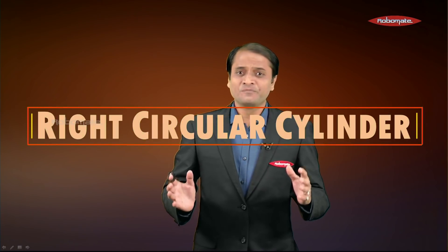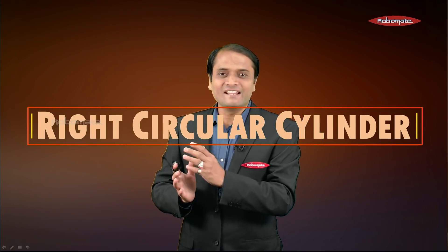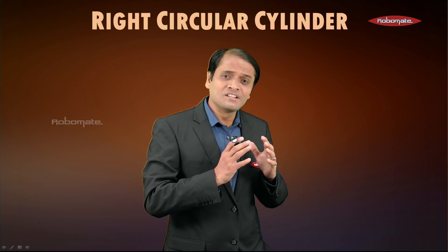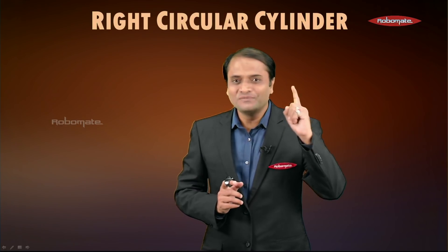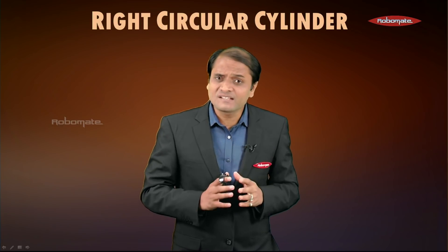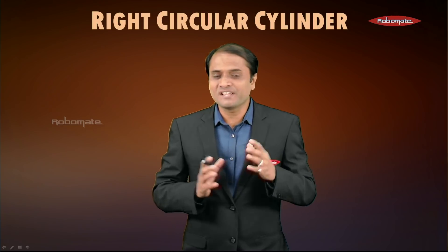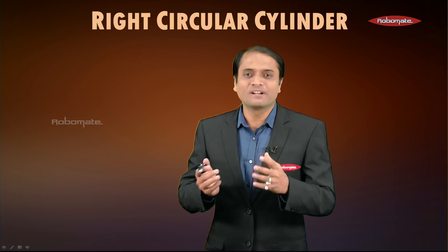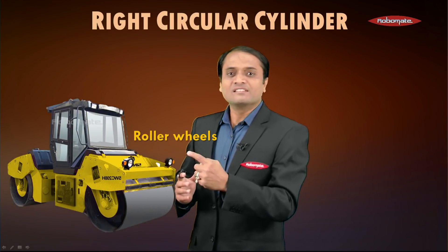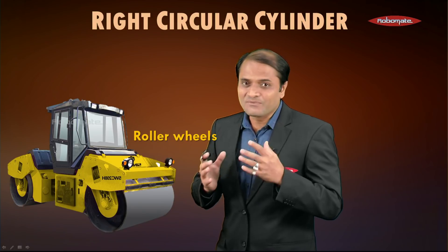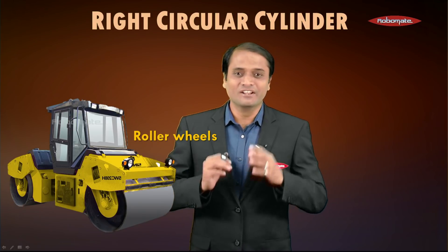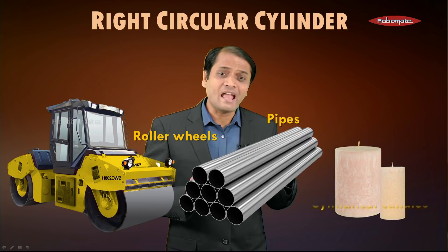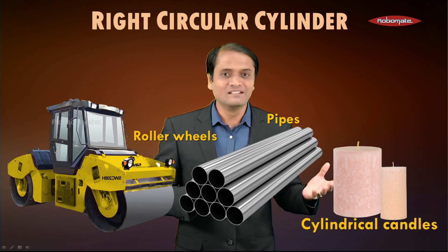The first object we are going to learn is a right circular cylinder. We will discuss its surface area and volume. Examples of a right circular cylinder include the wheels of a road roller, round pipes, and cylindrical candles.